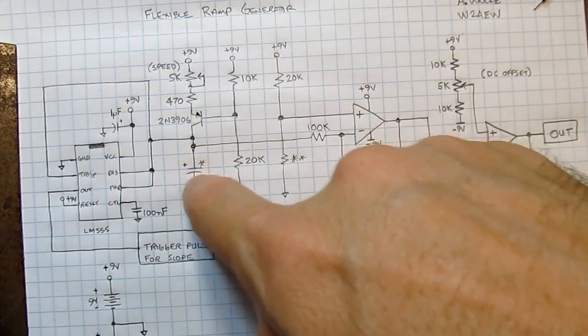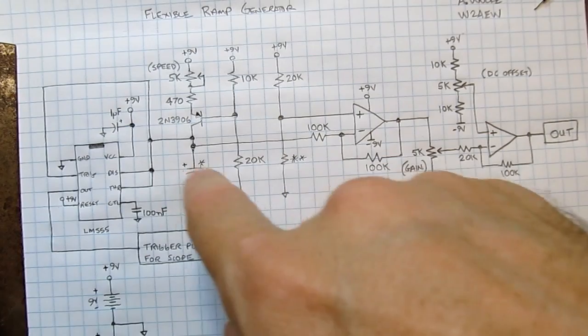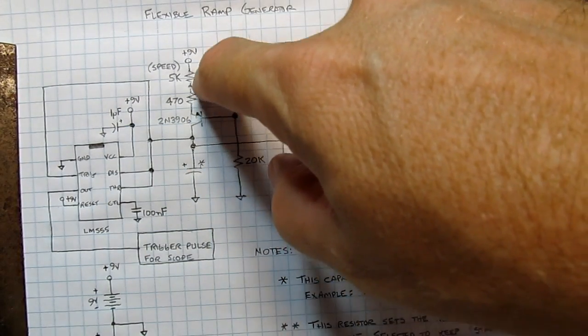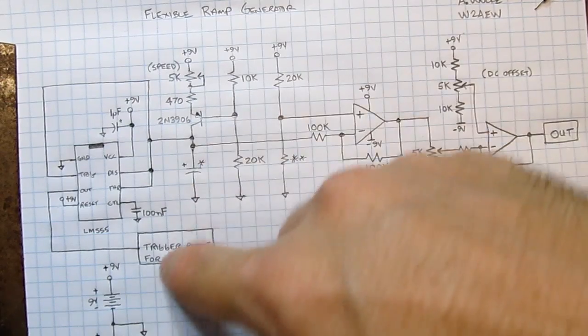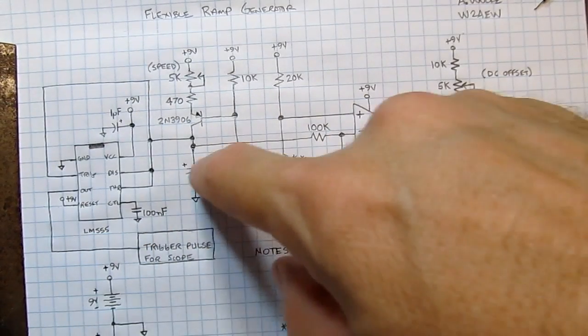So by changing the value of that capacitor, you can do that with a range switch. And by adjusting this pot, you can adjust how quickly or how slowly that voltage ramps up.